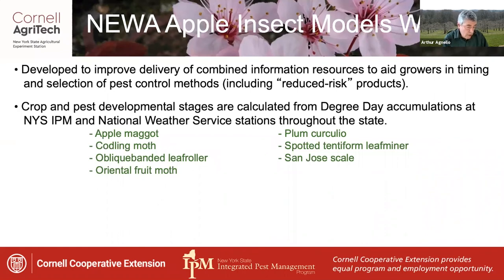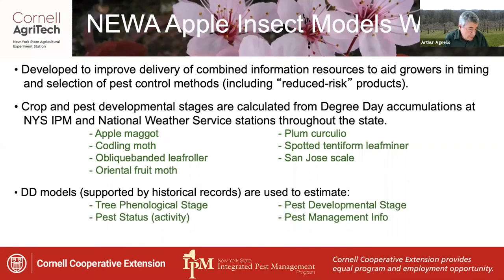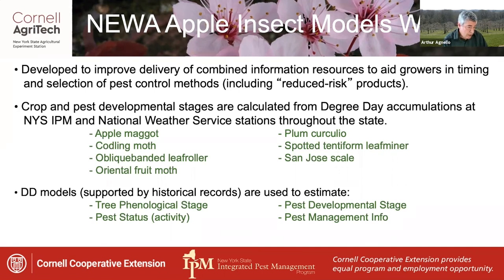It contains models for seven of the key pests in apples: apple maggot, plum curculio, codling moth, spotted tentiform leaf miner, OBLR, San Jose scale, and Oriental fruit moth. It uses degree day models supported by records of historical observations to estimate several types of information: tree phenological stage, like tight cluster, bloom, or petal fall; pest status or activity, such as adults emerging from overwintering sites; pest developmental stage — in other words, what's present out there: adults, eggs, or immatures — and pest management recommendations and background information.